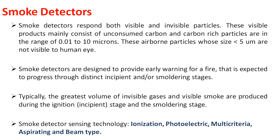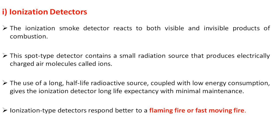The greatest volume of invisible gases and visible smoke are produced during the incipient and smoldering stages, and smoke detectors are best suited for these stages. The first type is the ionization detector, which reacts to both visible and invisible products of combustion. This ionization type detector contains a small radiation source — Americium-241 — which emits alpha particles. These alpha particles ionize the air and produce ions and electrons, which are measured by an electrode proportional to the ion current.